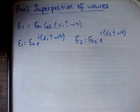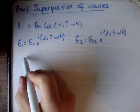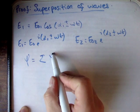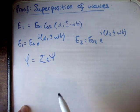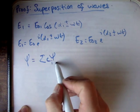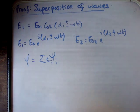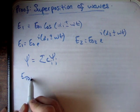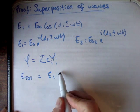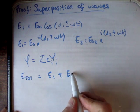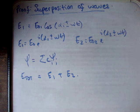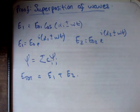We said at the start that the superposed wave is equal to the sum of its component waves. So that means E total is equal to E1 plus E2. That's pretty straightforward.